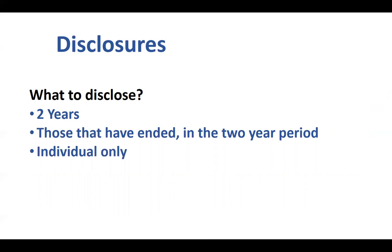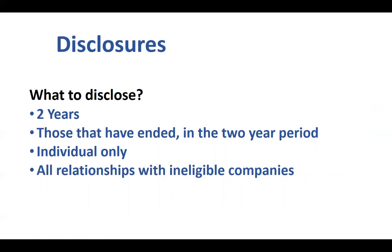The disclosure is for the individual only. Previously, you had to indicate if your spouse or partner had relevant relationships, but with the new guidelines, it's for the individual only. Also, it is all relationships with companies, and it does not matter if it's related to the topic or not. If they do have a relationship with an eligible company, they do indicate it. The form asks what product or service, and that helps us review it to determine if it is relevant to the topic.